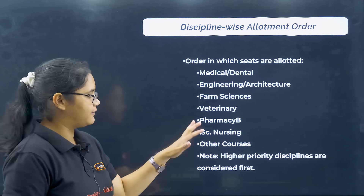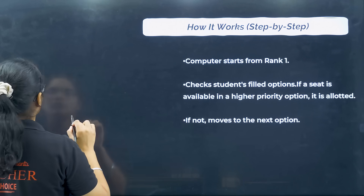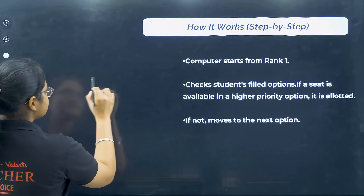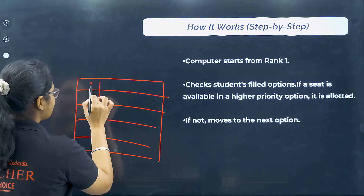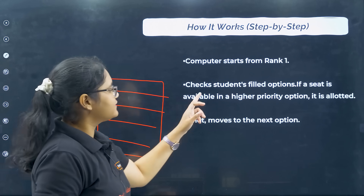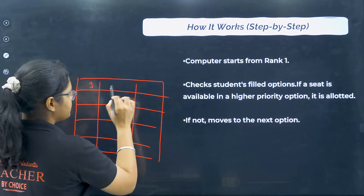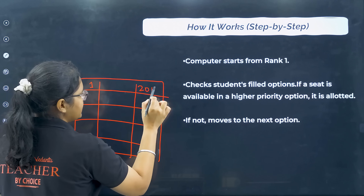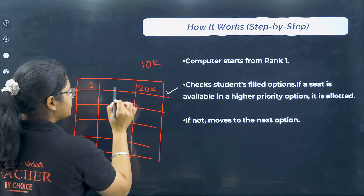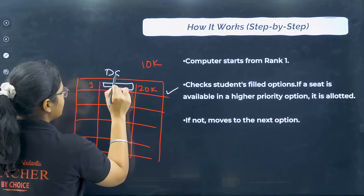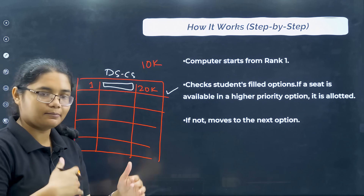Now let's see how it works step by step. The computer starts from rank one and checks your priority order — your option list. It checks the student's filled options and if a seat is available in a higher priority option, it is allotted. For example, if your first option has a cutoff of 20,000 and your rank is 10,000, you will get that seat — say, Dhanasagar Computer Science.